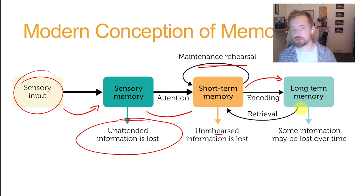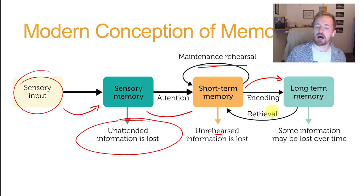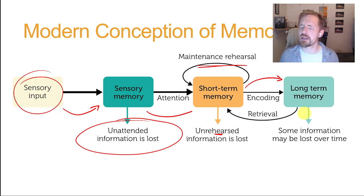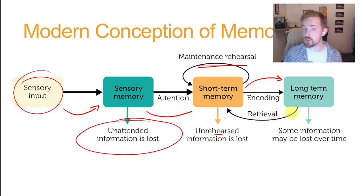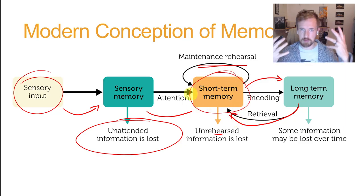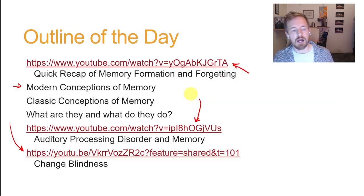From long-term memory, you can retrieve information over a very long period of time. The limits of that we're still discovering every day. If I were to ask you a year from now whether you remember that phone number, recalling it would be an example of retrieving from long-term memory back into short-term memory, where you're then thinking about it.